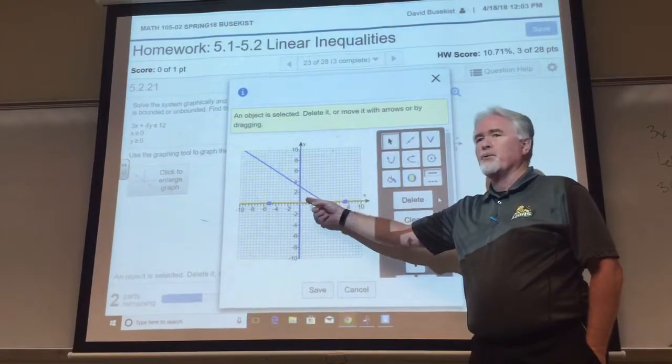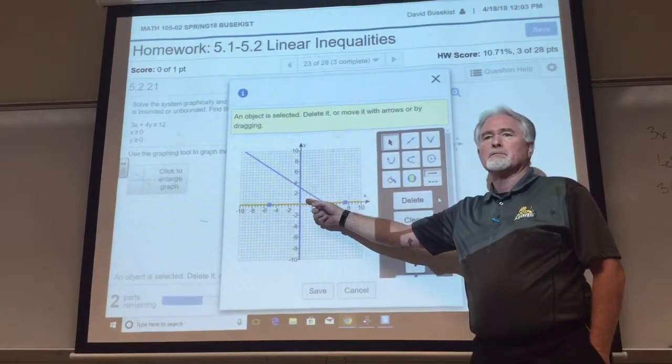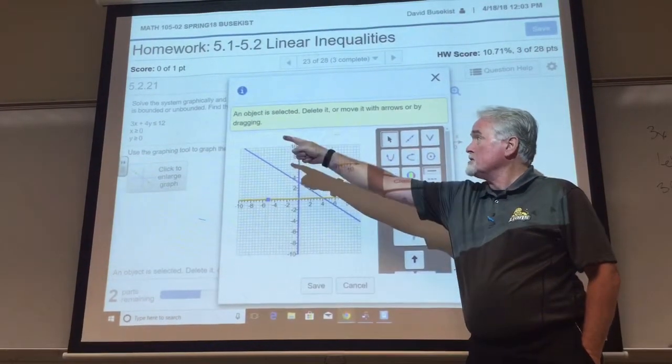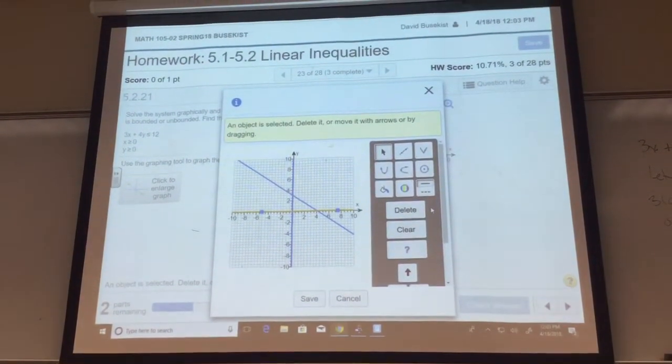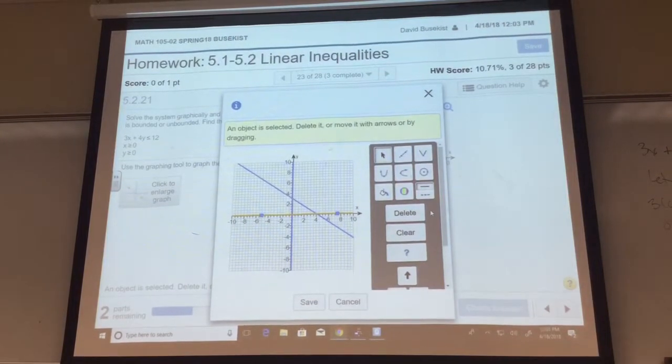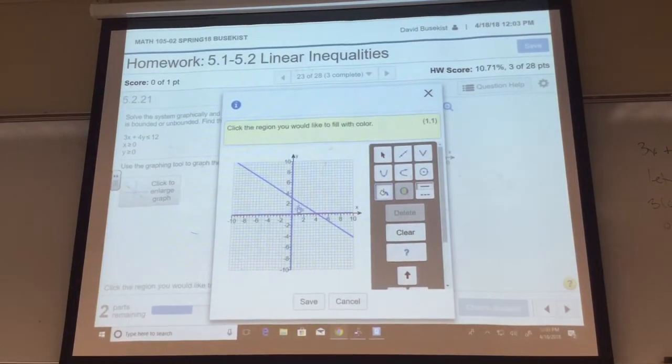1, 1. Easy. 3 times 1 is 3. 4 times 1 is 4. 3 plus 4 is 7. Is 7 less than or equal to 12? Then this must be my feasible region.